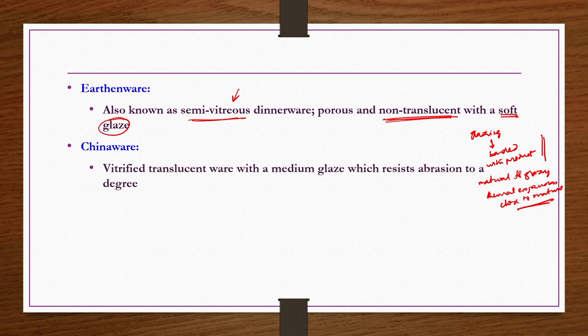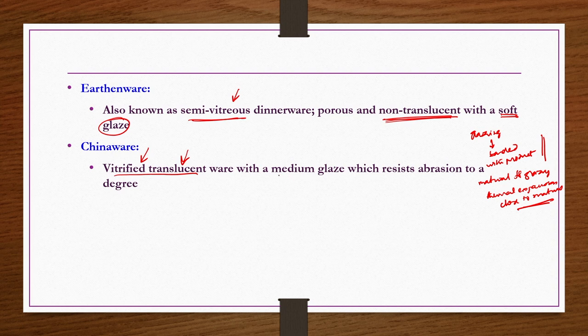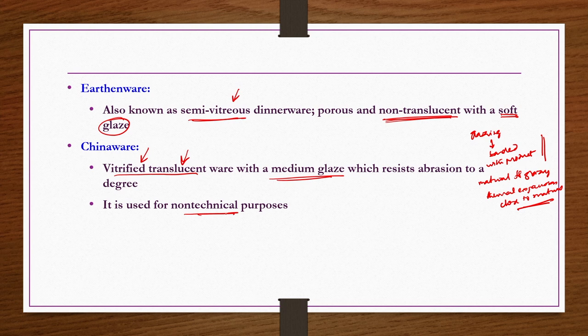Chinaware is vitrified and translucent. It allows light to pass through but the light is diffused, so you cannot identify objects on the other side. The glaze is a medium glaze, which resists abrasion only to a certain degree. It is used for non-technical purposes.